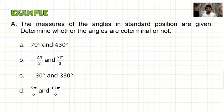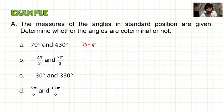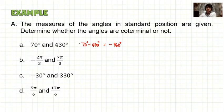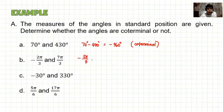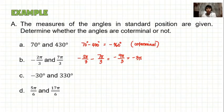Let's determine whether angles are coterminal. Letter A: 70 degrees and 430 degrees. Subtracting: 70 minus 430 equals negative 360 degrees. Since negative 360 is a multiple of 360, these angles are coterminal. Letter B: negative 2π/3 minus 7π/3 equals negative 9π/3, which equals negative 3π. Since negative 3π is not a multiple of 2π, these angles are not coterminal.